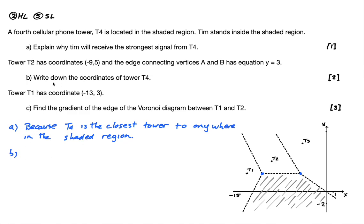Part B. Write down - tower T2, this tower here, has coordinates negative 9, 5. Let's write that in here. So this is, or sorry, negative 9, 5. That is this guy here. And the edge connecting A and B has equation Y equals 3, right? So this line here is Y equals 3. So if I continue this over here, this would be 3.